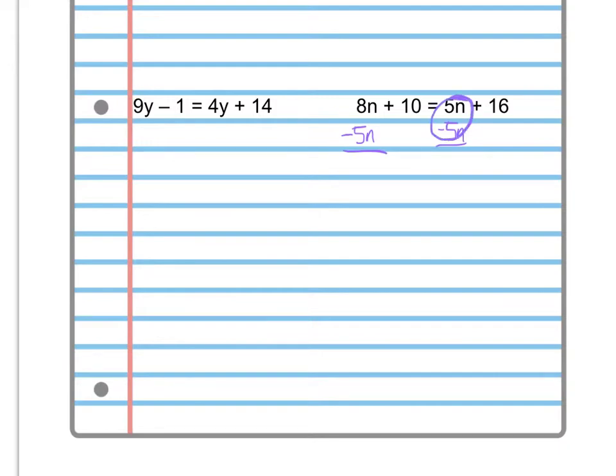This 5n minus 5n is just going to be 0, so that ends up being added to 16. That's just equal to 16. On the left side, we have 8n minus 5n leaves me with 3n's plus 10, so I have to remember to bring that plus 10 down.